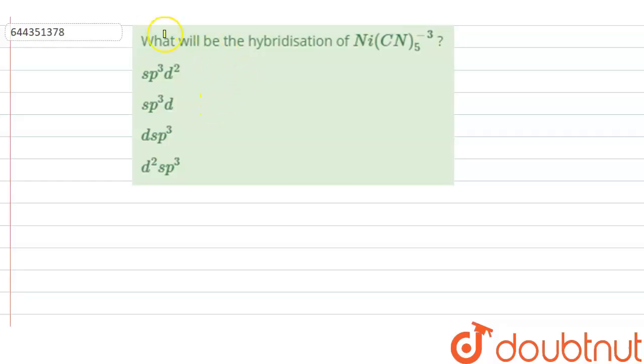The question says: What will be the hybridization of Ni(CN)5^3-? So in this question a compound is given, or you can say a complex is given, and we have to find the hybridization.